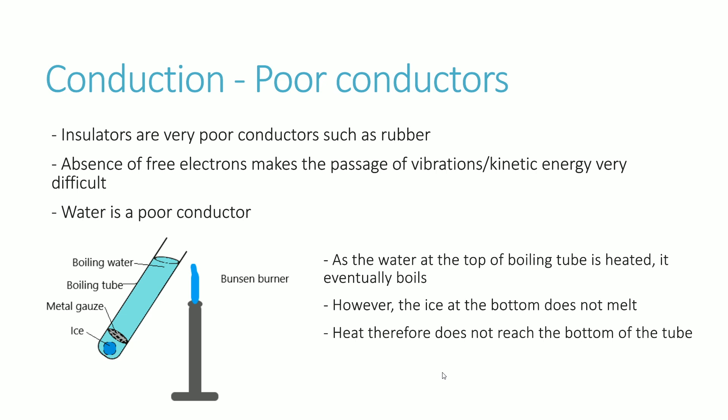Conduction is also relevant when we talk about poor conductors, which you can also call insulators. Rubber, for example, is a very bad conductor. Structurally, it doesn't have any free electrons, and therefore the transmission of kinetic energy through vibrations is very difficult in structures without free electrons. Rubber is a prime example of that.